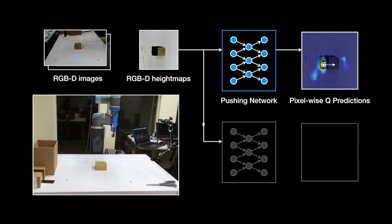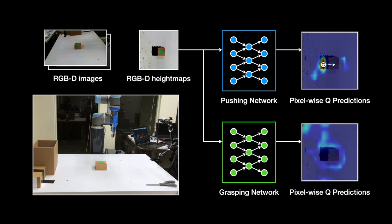Similarly for grasping, we feed the same height maps into another grasping network to generate pixel-wise predictions of Q values for grasping. In the second output, each pixel represents a physical grasp centered at that point in the scene, oriented horizontally with respect to the height map.